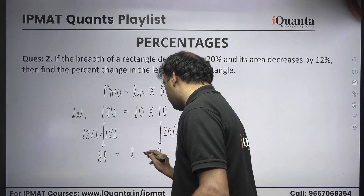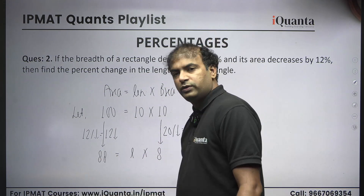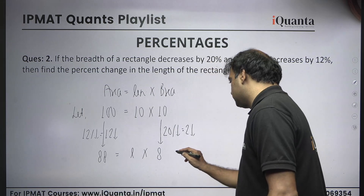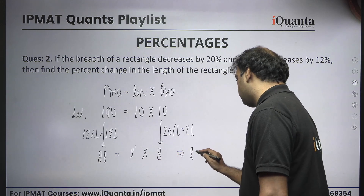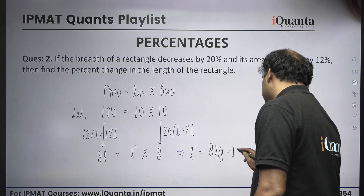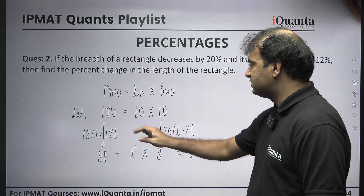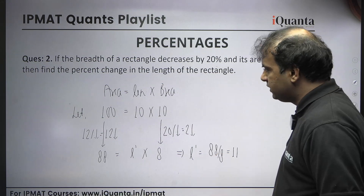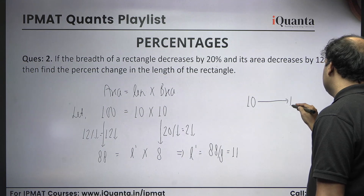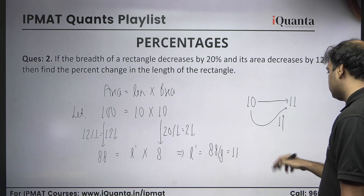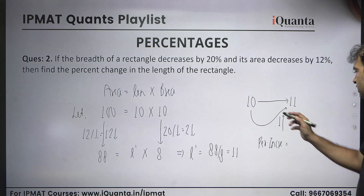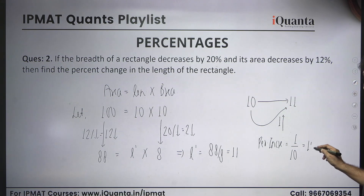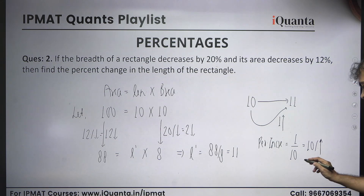We don't know the new length — call it L dash. Using area = length × breadth: 88 = L dash × 8, so L dash = 88 ÷ 8 = 11. Original length was 10, new length is 11 — the change is 1. Percentage increase = (increment ÷ initial value) × 100 = 1 ÷ 10 = 10 percent. The length is increasing by 10 percent.